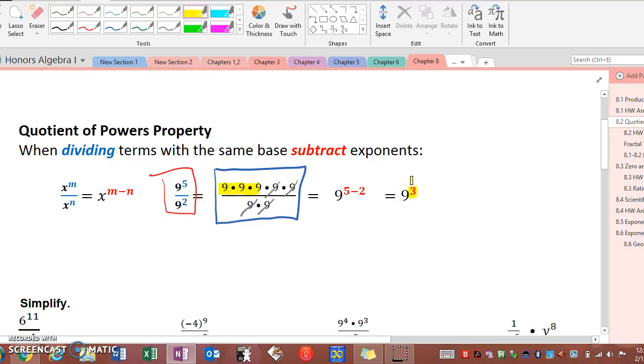But instead of expanding that out every time, and it would get a little bit crazy if our exponents were very large, we just need to apply the quotient of powers property. That says if you have the same base in a quotient or a fraction, all you need to do is subtract your exponents to get your simplified expression in exponential form.